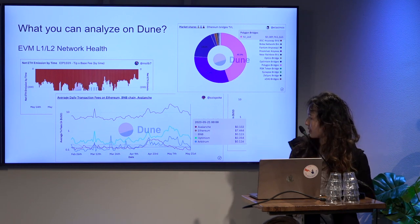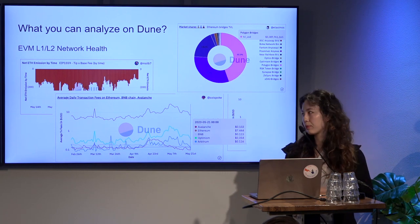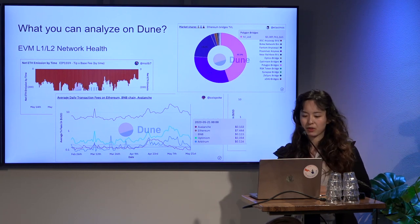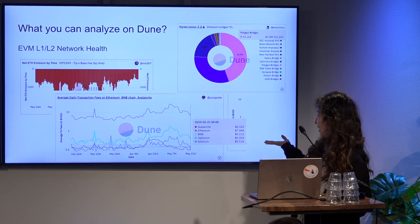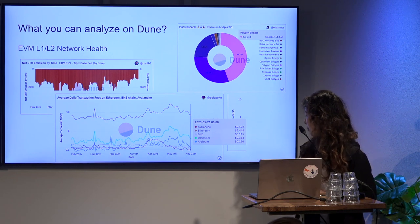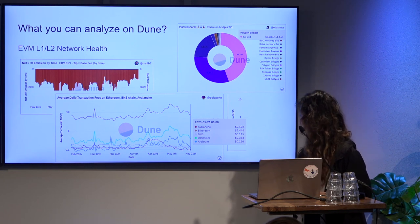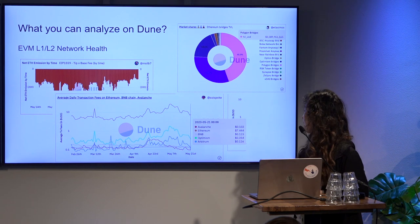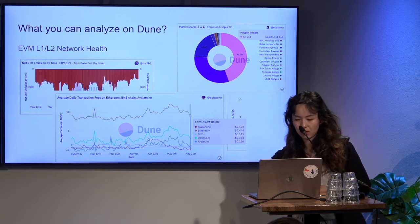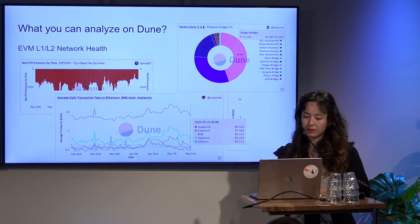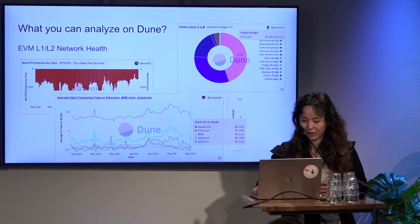Another chart compares different network costs for making a trade. Ethereum is pretty expensive — if you look at this chart you can clearly see you're going to spend an average of around $7 for doing anything on Ethereum. Comparatively, Optimism and Arbitrum are much, much lower cost — one is 35 cents, another is about 10 cents. Avalanche and BNB also have around a 10-cent cost. This gives a normal user a better understanding of which networks are feasible to use and which are very costly.